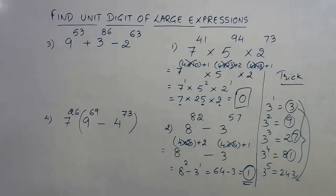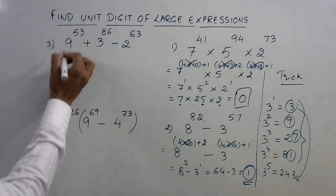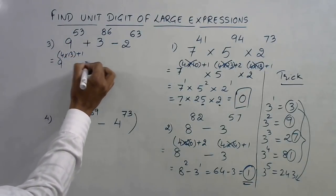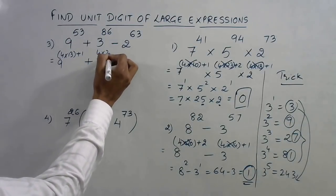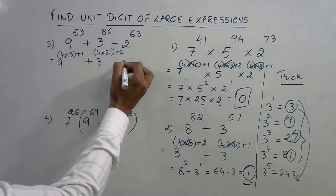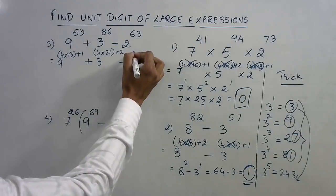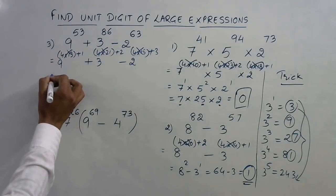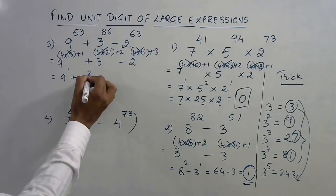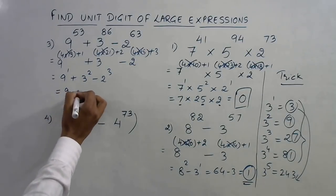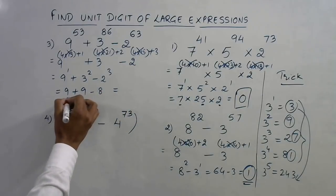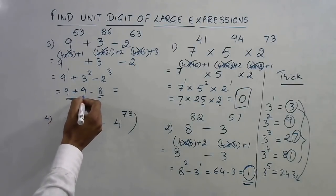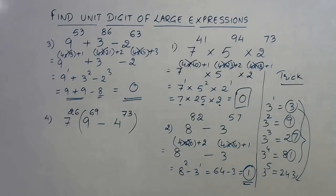Likewise, you can find the unit digit here. See, 9 raised to power 53. 52, 4 into 13 is 52 and you have 1 left out. Then 3 raised to power 86, 4 into 21 is 84 plus 2. And 60 is divisible, so 4 into 15 is 60 plus 3. Now I am eliminating all multiples of 4. This is 9 raised to power 1, 3 raised to power 2, 2 raised to power 3. So, this is 9 plus 9 minus 8. 9 plus 9 is 18, 18 minus 8. Unit digit is 8. So, 8 minus 8 is 0, unit digit will be 0 in this case.